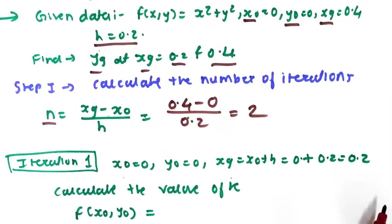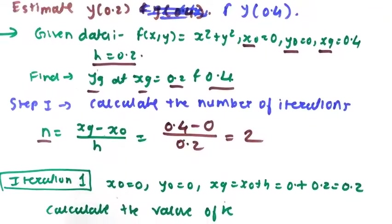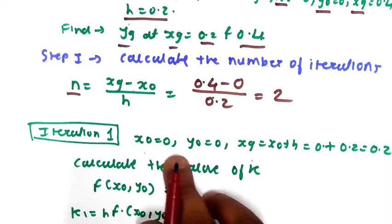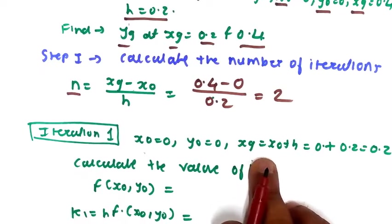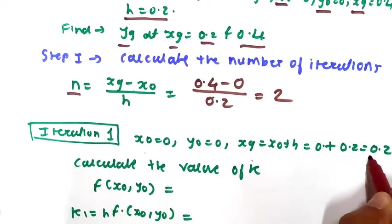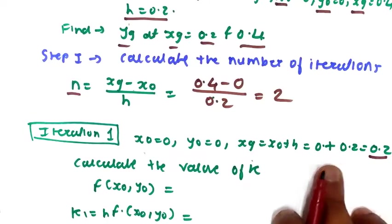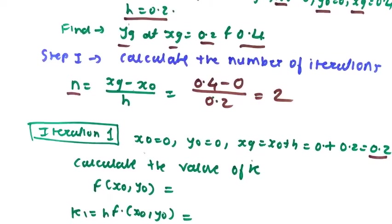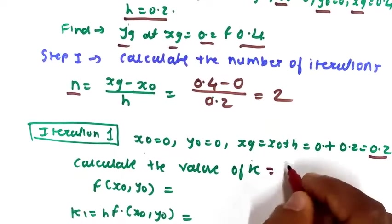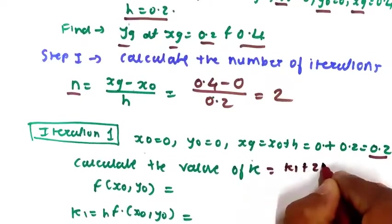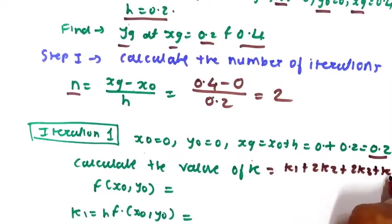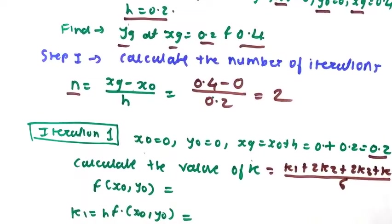In this numerical we are only going to perform the first iteration; the second iteration will be homework for you. For Iteration 1, the initial conditions are: x0 equal to 0, y0 equal to 0, and xg equal to x0 plus h, which is 0 plus 0.2. We have to calculate the value of k, which is k = (k1 + 2k2 + 2k3 + k4) / 6.